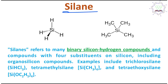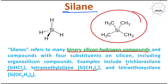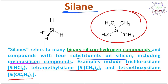So what is silane actually? Silane refers to many binary silicon-hydrogen compounds. Generally, not only silicon-hydrogen compounds — some other examples are also possible, like trichlorosilane (HSiCl₃), tetramethylsilane (Si(CH₃)₄), and tetraethyl orthosilicate. In these cases, you can see the valency of silicon is four, so there are four substituents on silicon, including organosilicon compounds.